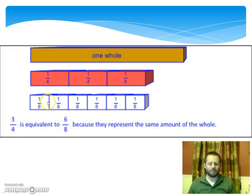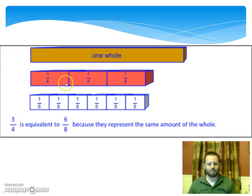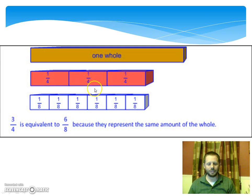We also have a smaller rod that we're using to represent eighths. For every two of these eighth pieces, we get one of these one-fourth pieces. So this tells us that two-eighths is equal to one-fourth because they're the same size piece out of our whole. So if we read the statement here: three-fourths is equivalent to six-eighths because they represent the same amount of the whole. One-two-three-fourths equals one-two-three-four-five-six-eighths because for every two-eighths you get one-fourth. These are what we call equivalent fractions — they have the same value as each other.